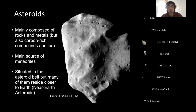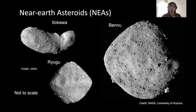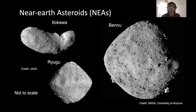Most asteroids are situated in the asteroid belt, but many reside closer to Earth — some we call near-Earth asteroids. Examples of these have been visited by spacecraft. The asteroid Bennu is currently the target of NASA's OSIRIS-REx mission, which is planning to collect a sample from this near-Earth asteroid and return it to Earth. Similarly, Ryugu is a near-Earth asteroid visited by the Japanese Hayabusa-2 mission, which also collected samples from the asteroid and is bringing them back to Earth.